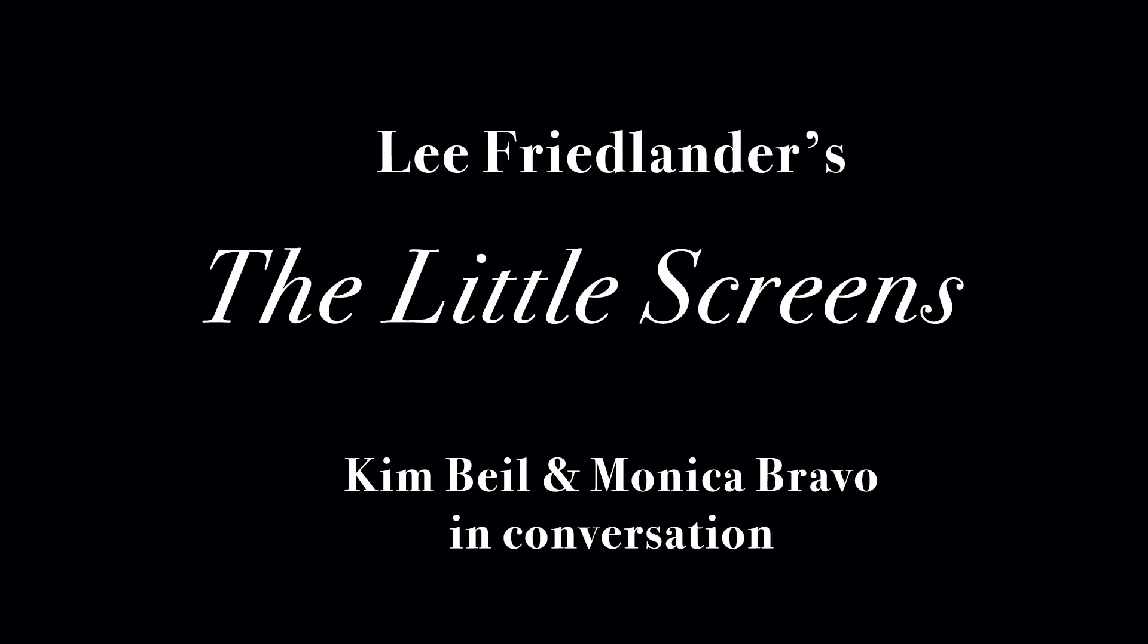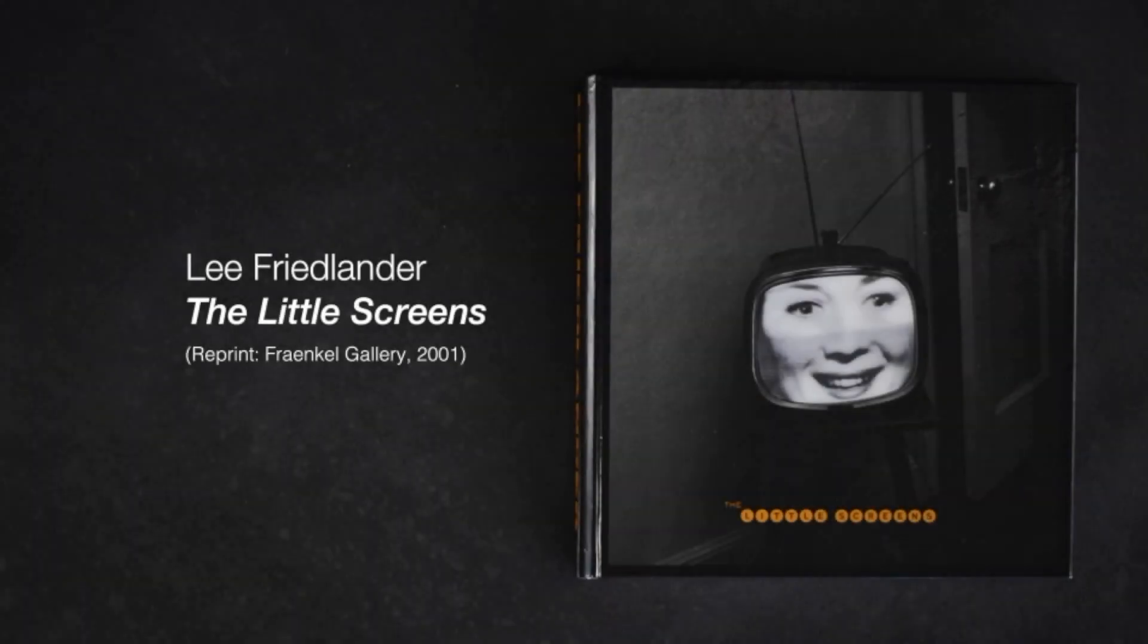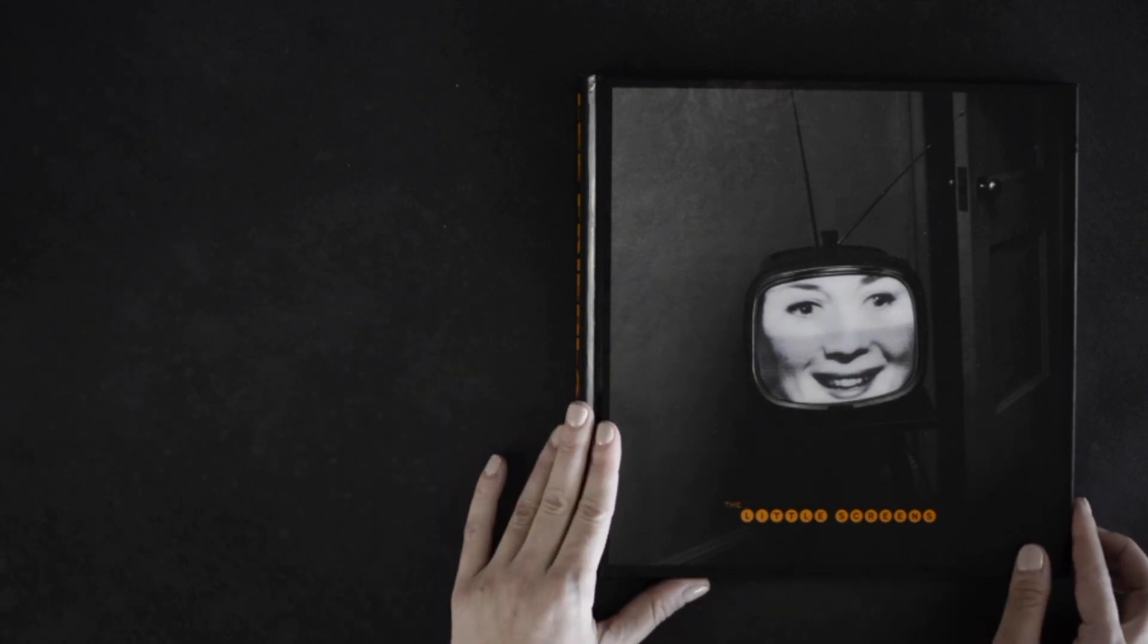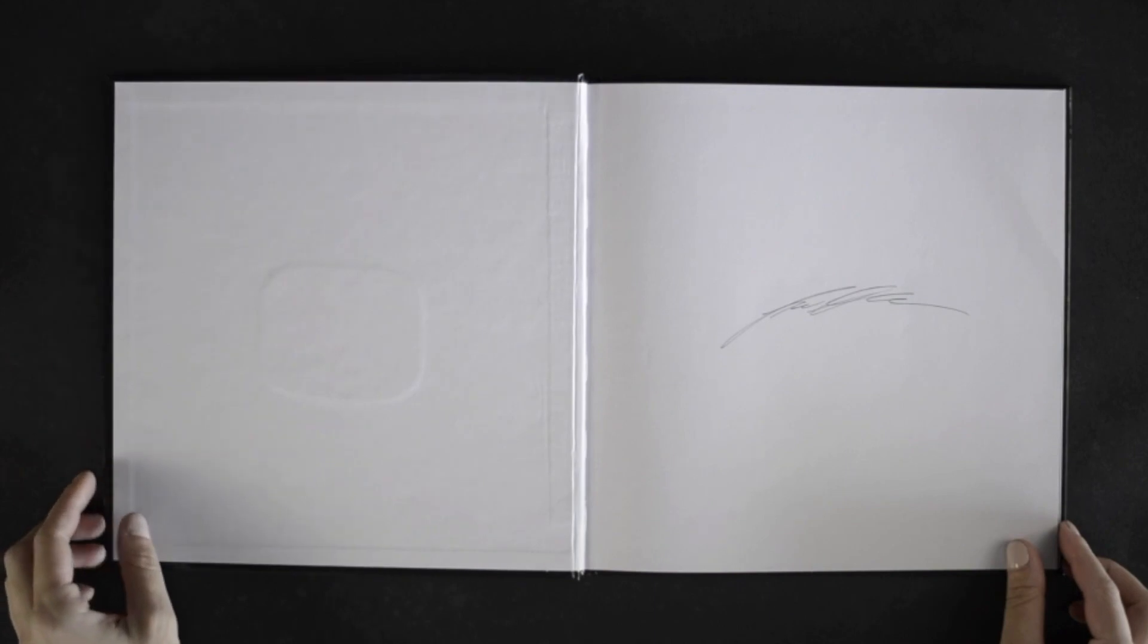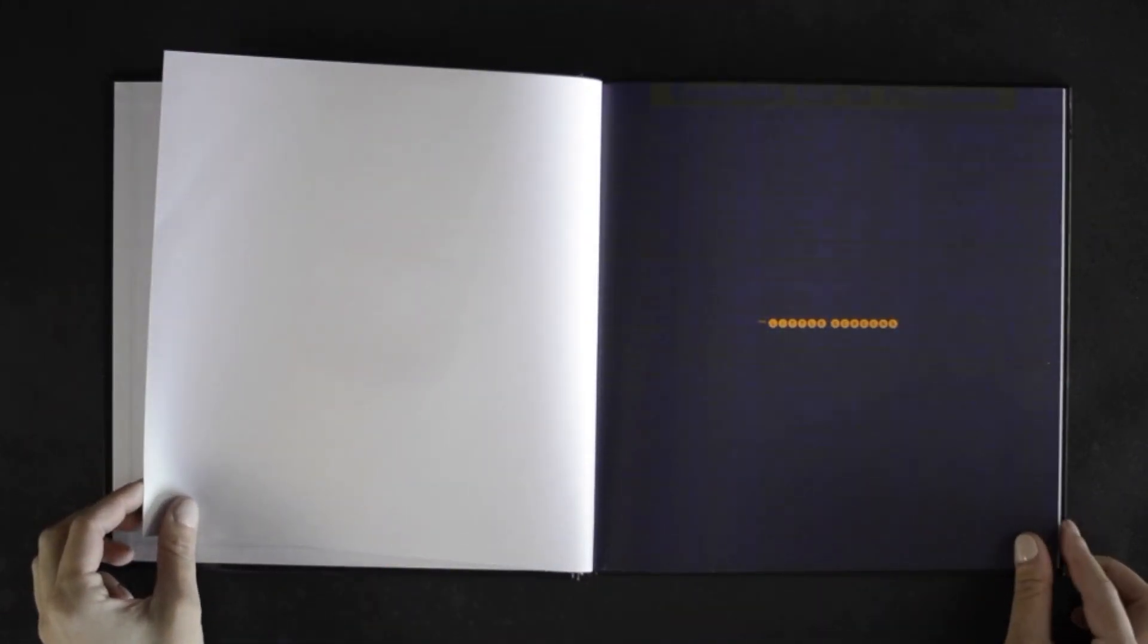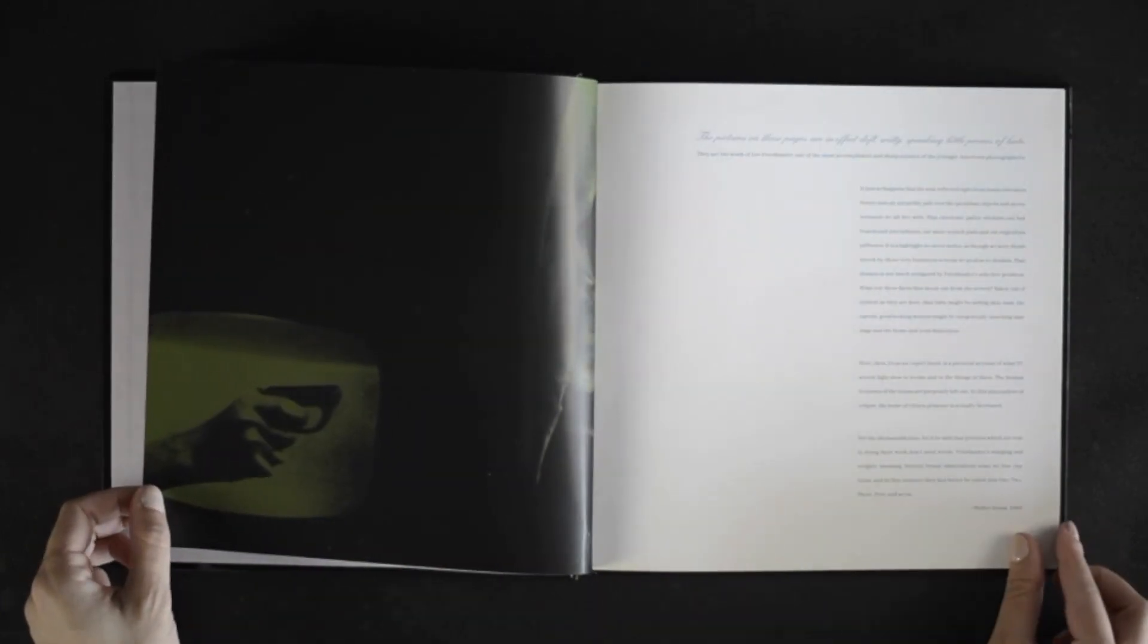Today we are going to look at Lee Friedlander's The Little Screens. This book was published in 2001 by Frankel Gallery, and it takes a series of photographs made by Friedlander in 1962 and 1963, which were originally published in Harper's Bazaar. There were originally just six pictures, and they included a comment by Walker Evans.